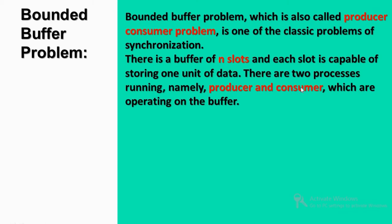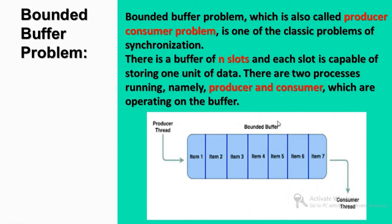There are two processes that run on the buffer. One process is the producer and one process is the consumer — because this is the producer-consumer problem, also called the bounded buffer problem. Both processes are operating on the buffer. In the diagram, this is the producer-consumer problem.